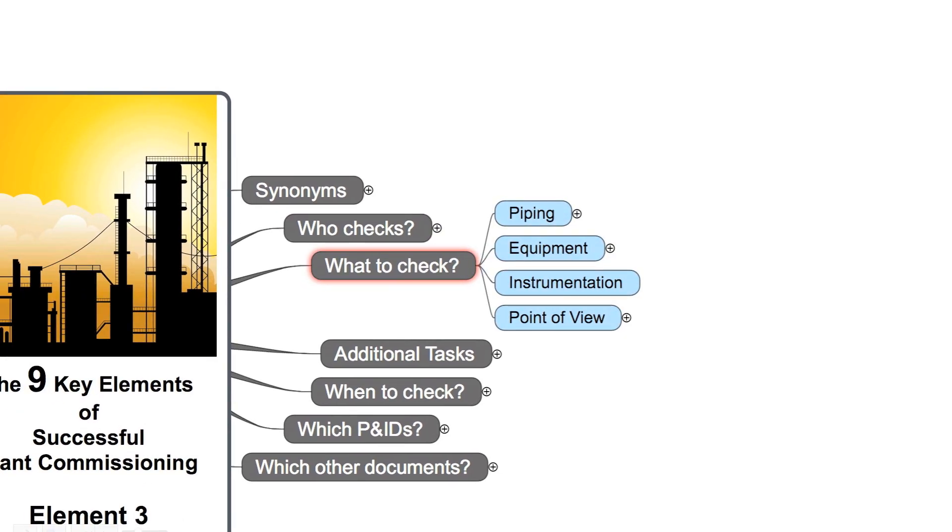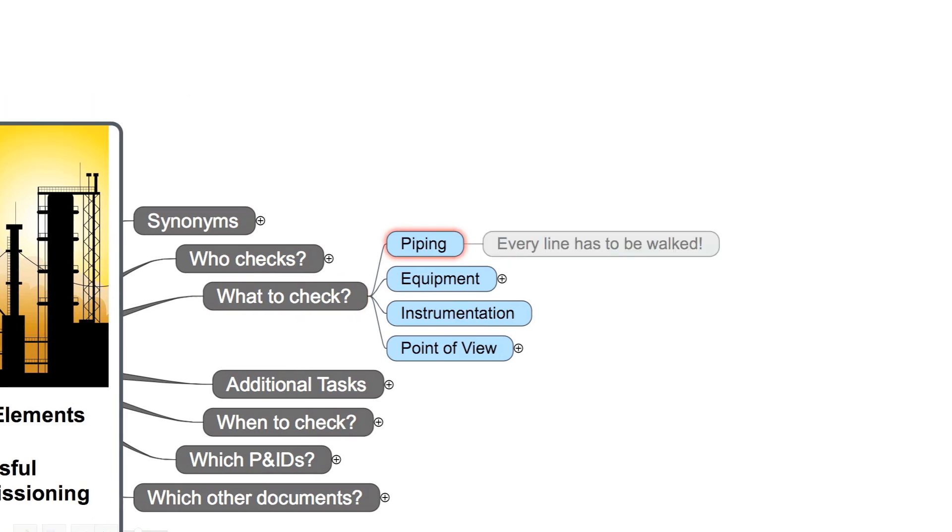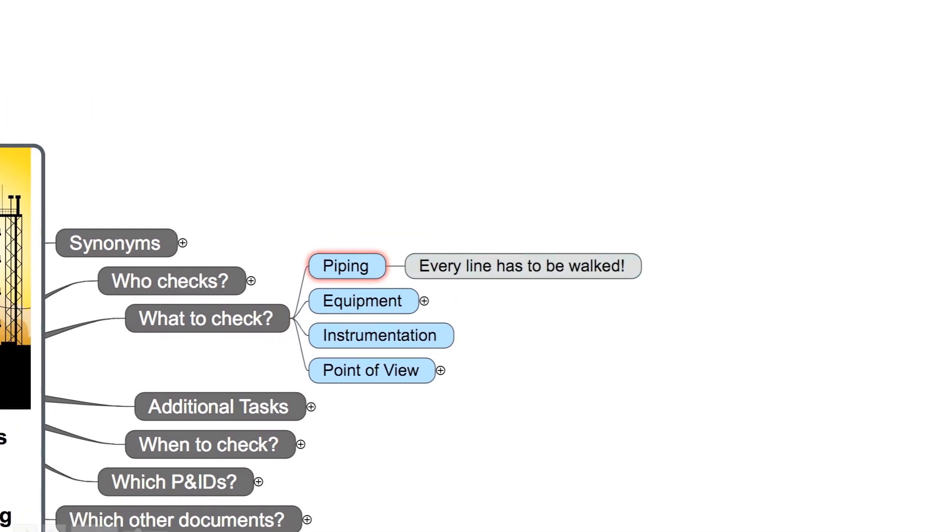Which items have to be checked? We have to check all the piping. Here it is very important to walk each and every single line.